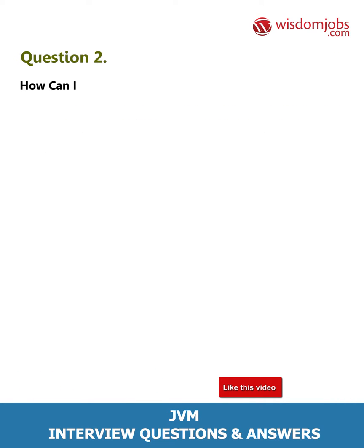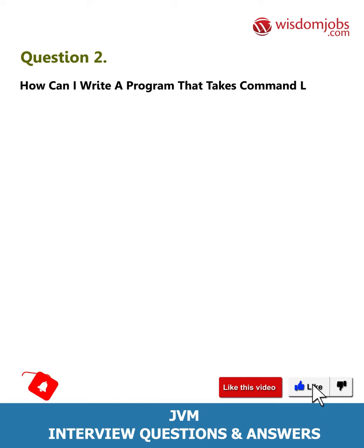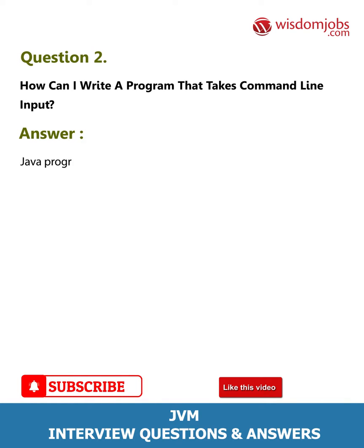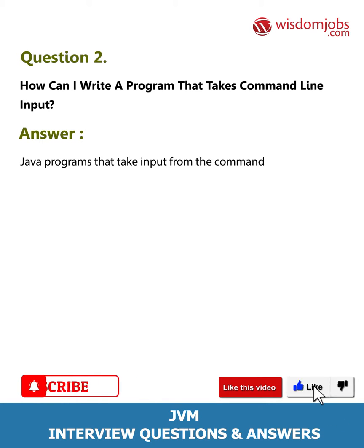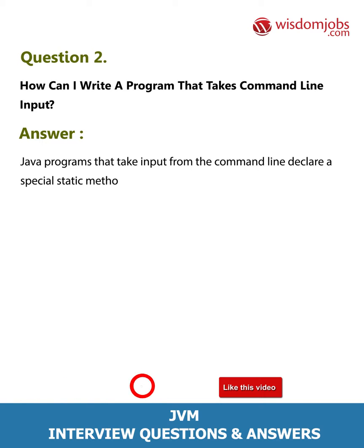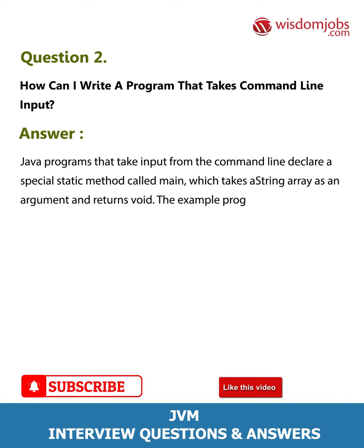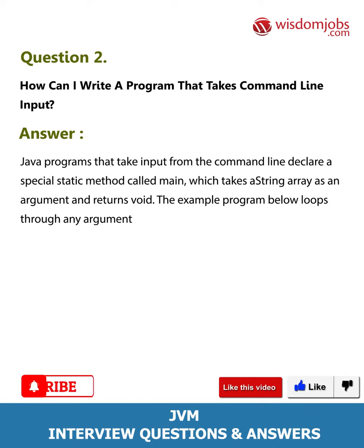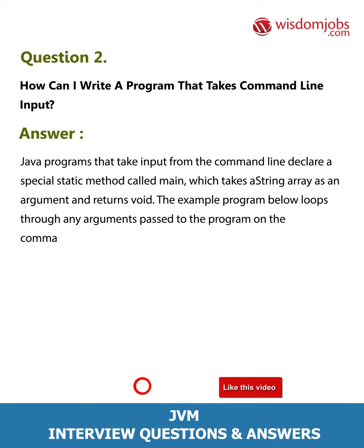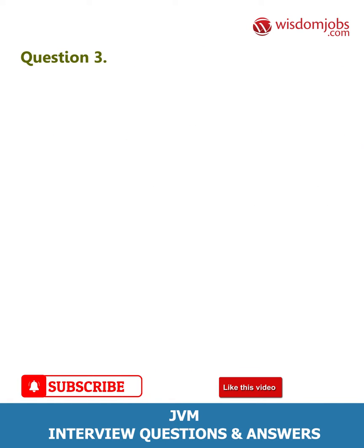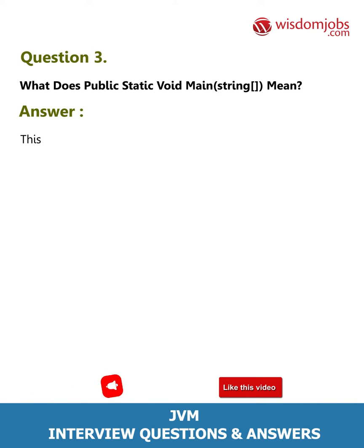Question 2: How can I write a program that takes command line input? Answer: Java programs that take input from the command line declare a special static method called main, which takes a string array as an argument and returns void. The example program loops through any arguments passed to the program on the command line and lists their values.